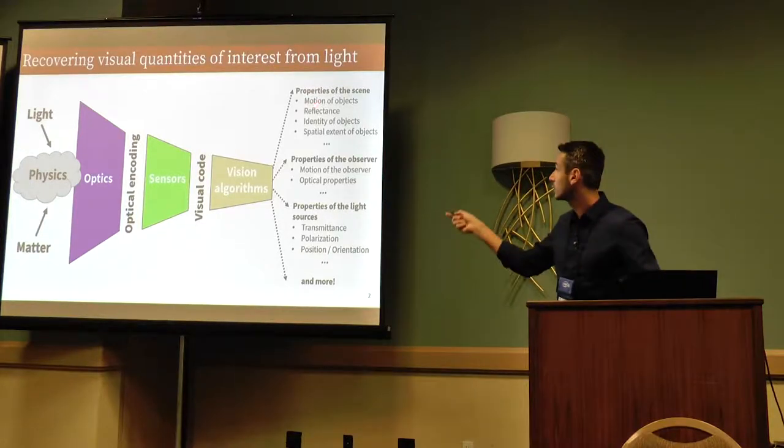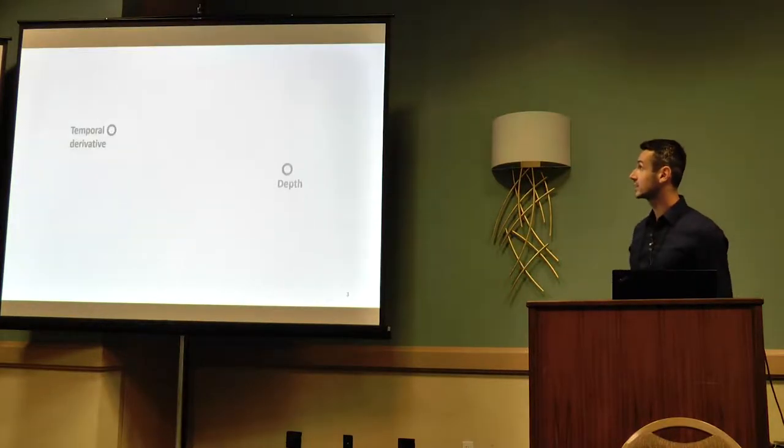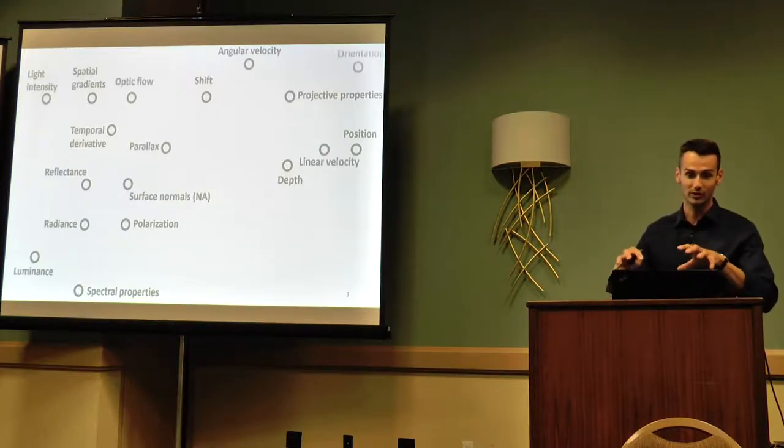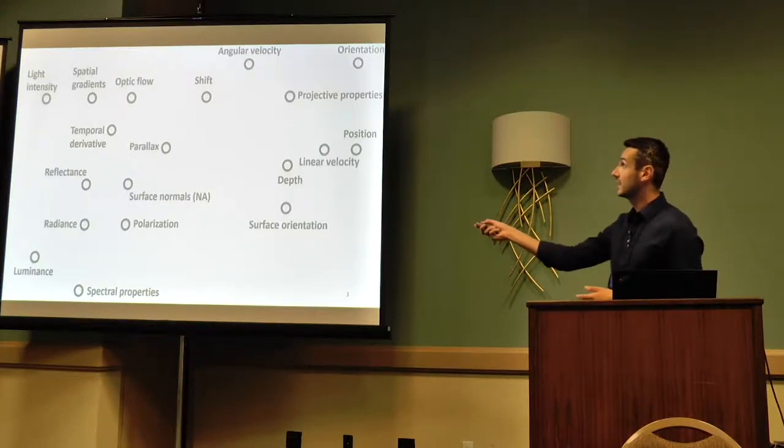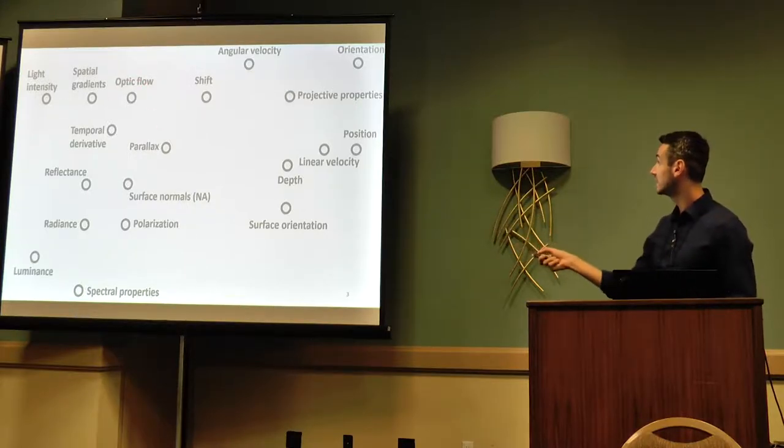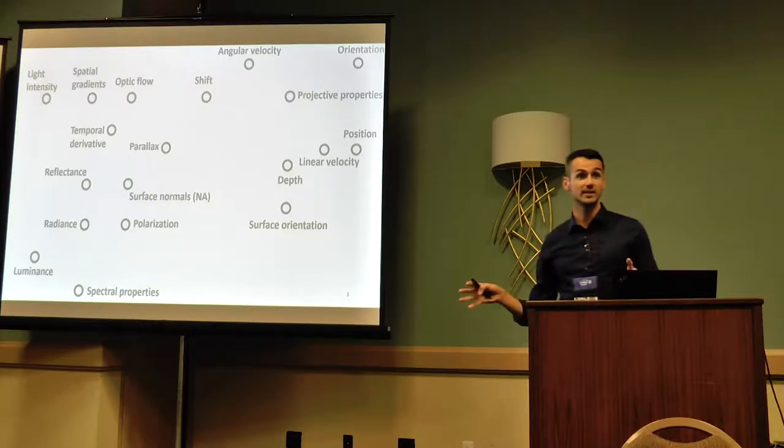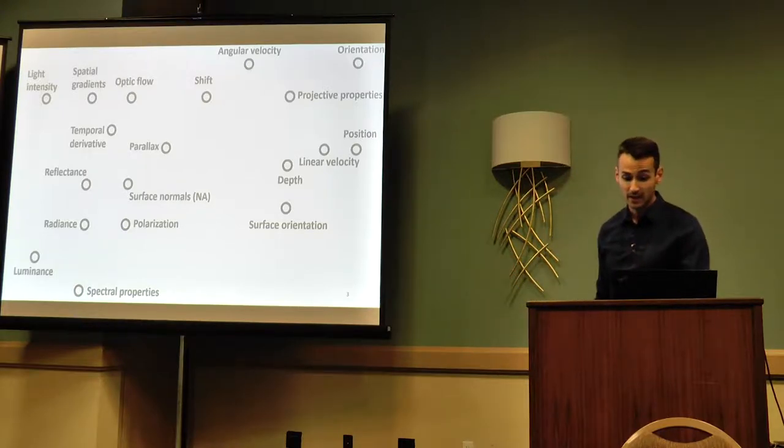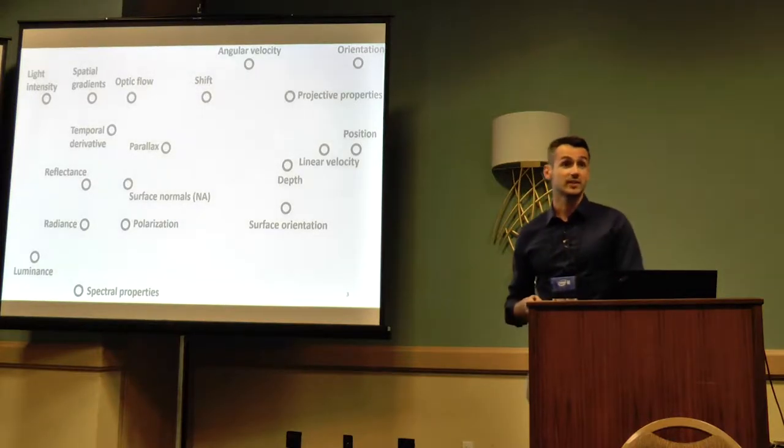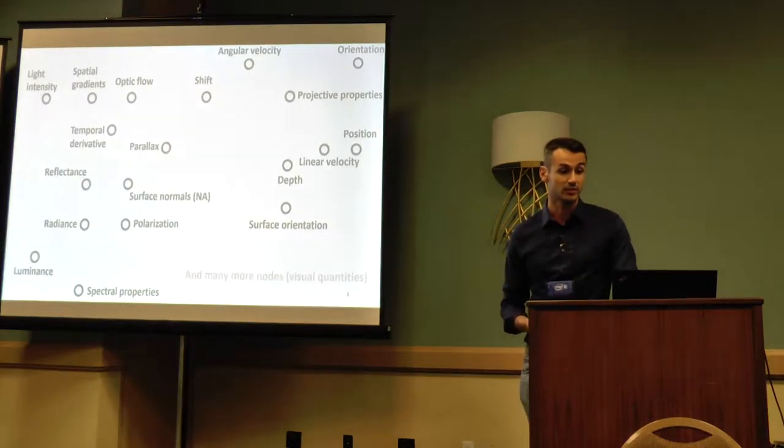Now if we go into slightly more jargon, and compile down these quantities in a bunch of known words to this community, we get, say, apparent motion of objects in the focal plane, that's called optic flow, or light intensity, or depth. This has as many visual quantities that all of us might know.